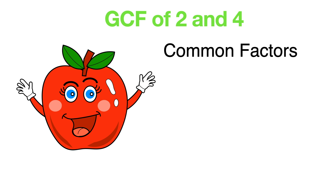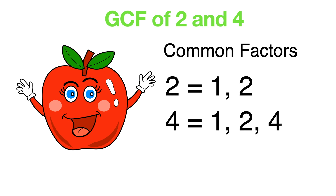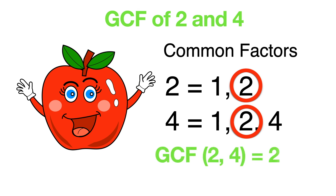For example, let's find the GCF of two and four. First we need to find common factors. The factors of two are one and two. The factors of four are one, two, and four. The common factors are one and two. The greatest number is two. Therefore, GCF of two and four is two.